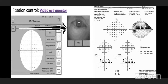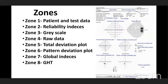After the test, we get a single-frame analysis printout with eight zones. Zone one: patient data and test data. Zone two: reliability indices. Zone three: grayscale. Zone four: raw data. Zone five: total deviation plot. Zone six: pattern deviation plot. Zone seven: global indices. Zone eight: GHT — glaucoma hemifield test.